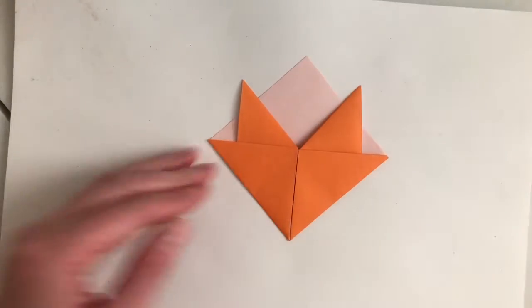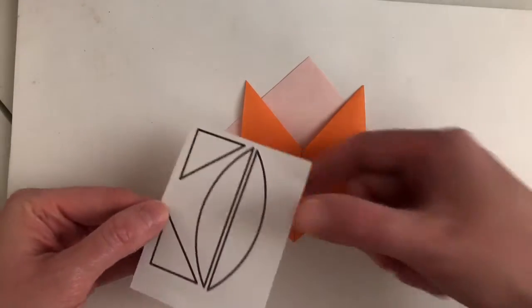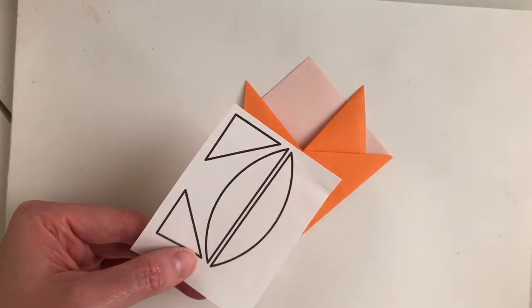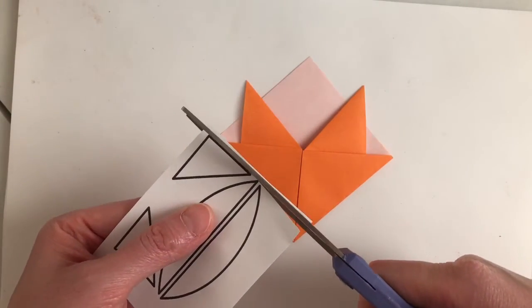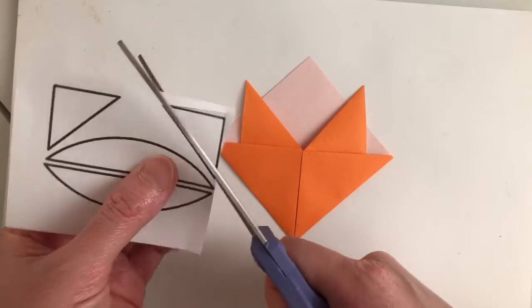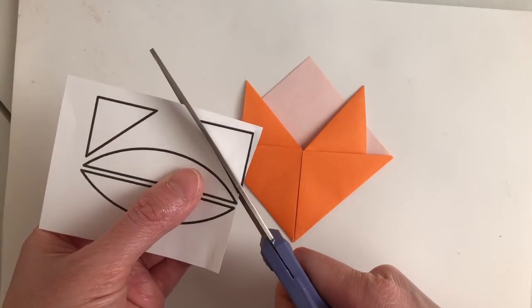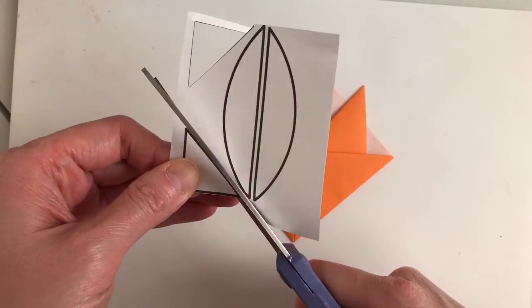Now we're done with the origami portion of this project. We're going to get our white shapes and cut them out. We're going to fast forward here, but if you're doing this, you want to take your time and carefully cut along the black lines.